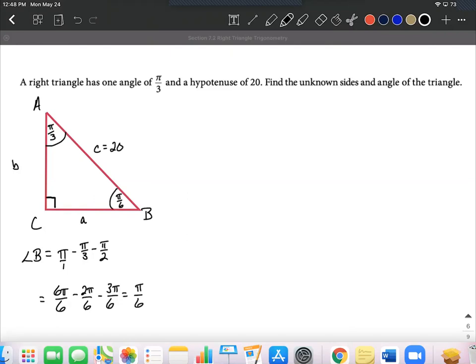All right, to find a and to find b, what I'm going to do is I'm going to focus on this angle, pi over three. And as I do that, I'm going to go ahead and label this as our opposite side, our adjacent side. And then our hypotenuse is going to be the 20 as indicated from the very beginning.